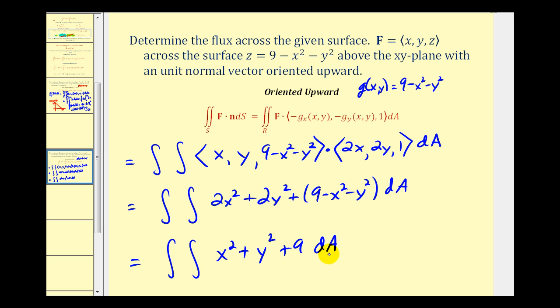And before we decide our limits of integration, let's go and look at our x, y trace. So if z is equal to zero, we would have x squared plus y squared equals nine. So we have a circle centered at the origin with a radius of three. So I think what we'll do here for this one is use polar coordinates. Let's go ahead and do the conversion on the next page.